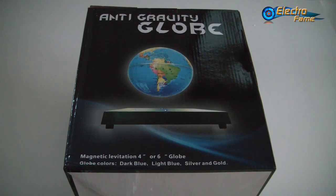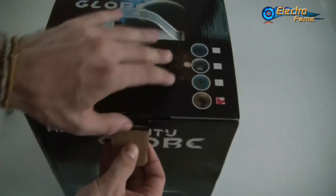This is the anti-gravity globe. It's working by magnetic levitation and we can first have a look at the box to see exactly how this cool gadget looks like.